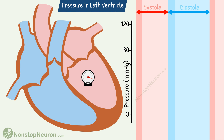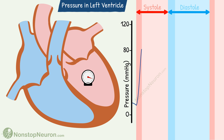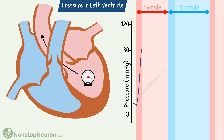We will start our discussion with the systole. At this point, all the valves are closed and ventricular pressure is on the lower side. Now the ventricles contract as closed chambers. This produces a sharp rise in the pressure. Then the aortic valve opens and there will be a rapid ejection of blood.